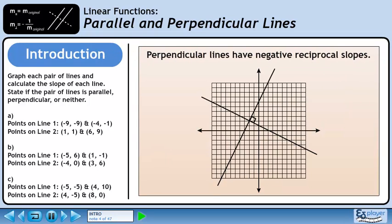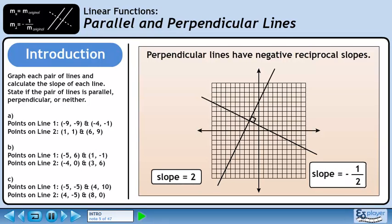Perpendicular lines have negative reciprocal slopes. Visually, perpendicular lines lie at right angles to each other. The slope of the first line is 2 and the slope of the second line is negative 1 over 2.